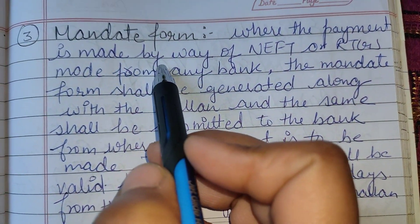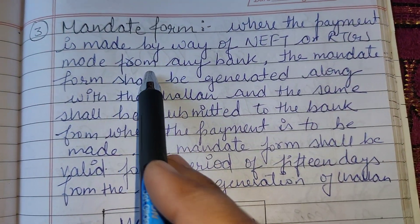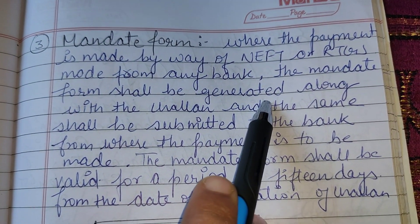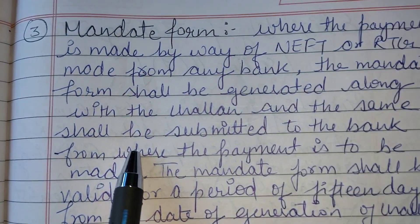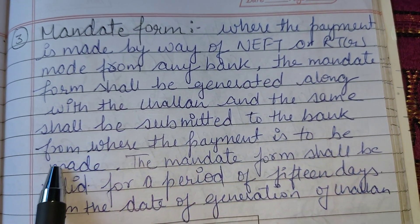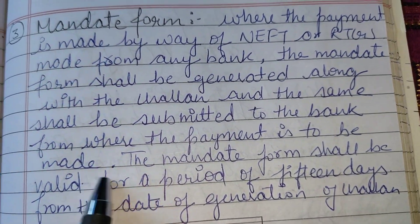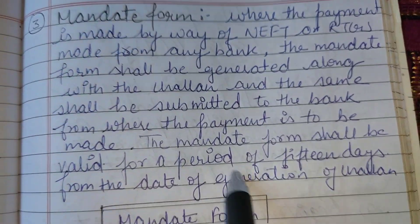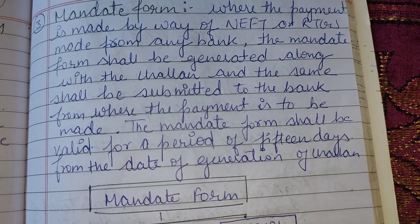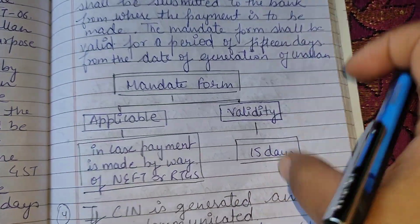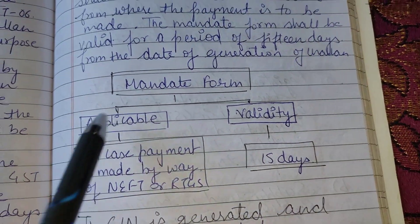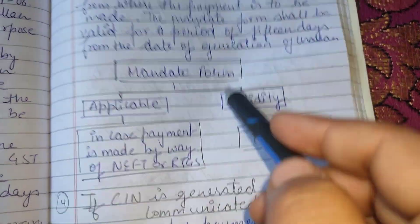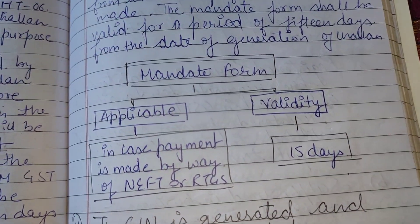The third step is the mandate form. Where payment is made by way of NEFT or RTGS from any bank, the mandate form shall be generated along with the chalan and the same shall be submitted to the bank from where the payment is to be made. The mandate form shall be valid for a period of 15 days from the date of generation of the chalan.